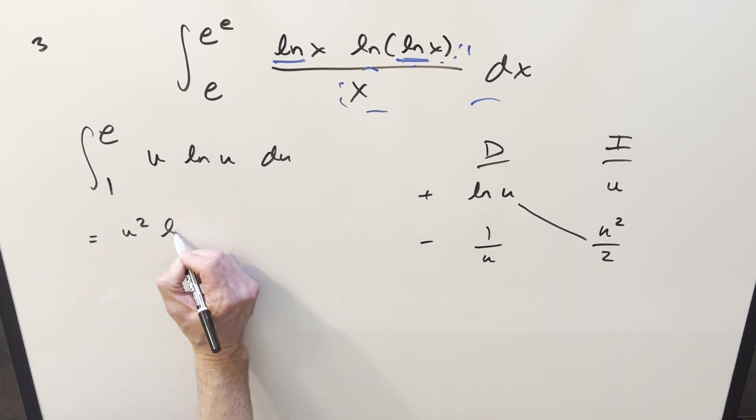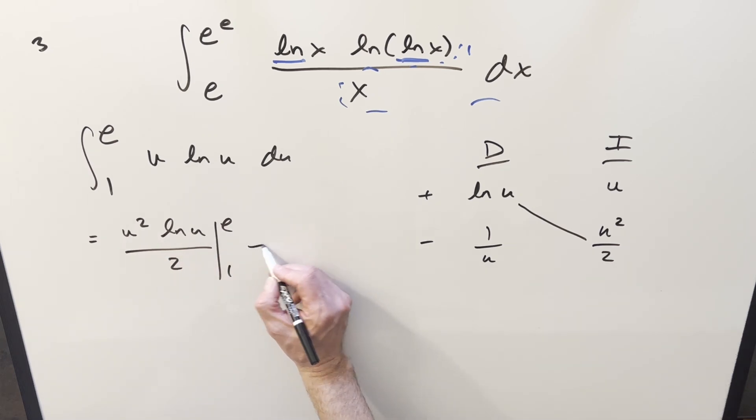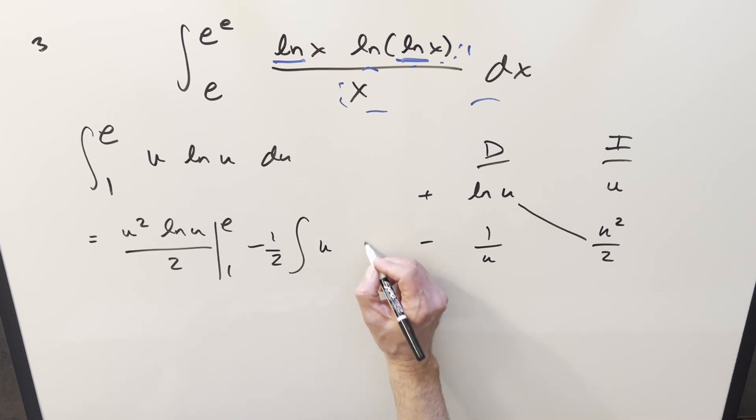So part of the solution is going to be on the diagonal. We'll write it as u² ln u over 2 from 1 to e. And then here we've got an integral, but let's see, we'll bring like minus 1 half out front of this integral. And then u² over u, it's going to cancel and just give us a u, du, and sorry, this is from 1 to e.